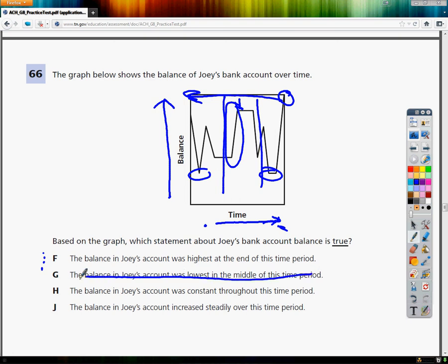H says the balance of Joey's account was constant through the time period. It goes up and down like crazy, he doesn't have a constant. Constant would mean it stayed the same, that would be like a flat line.